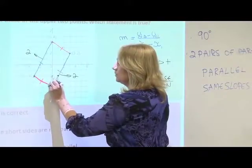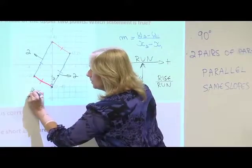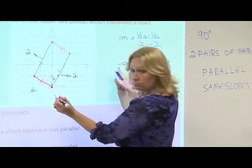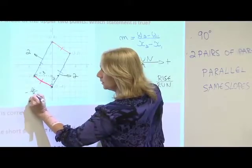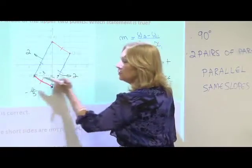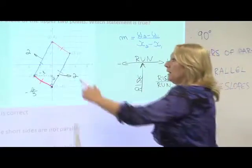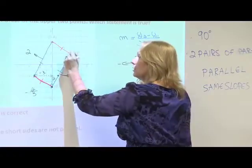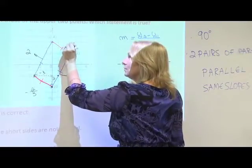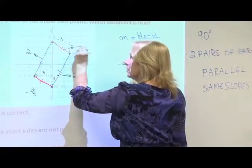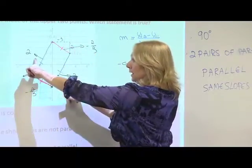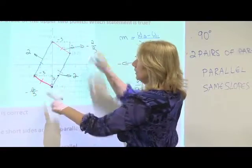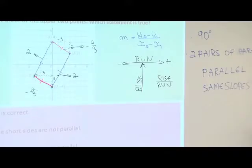I'm going to rise two. So rise two. And then I'm running to the left, negative three. So the slope of this red one is negative two-thirds. Let's see the next one. If this slope is the same, then all of them are parallel. Two, negative three. Bingo. They all have the same. This is parallel to this, and this is parallel to this. Minus two-thirds, minus two-thirds. So this is checked. I have two pairs of parallel lines.